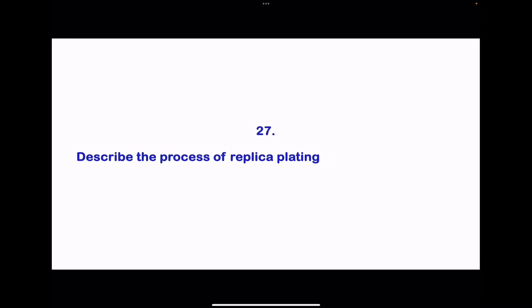Question 27. Describe the process of replica plating. In replica plating, a sterile velvet cloth or filter paper is placed onto a master plate to pick up some cells from each colony, then pressing it onto a secondary plate with selective media. After incubation, growth on the replica plate is compared to that on the master plate to identify colonies with specific traits, such as antibiotic resistance or metabolic capabilities. This method is essential for studying microbial genetics, identifying mutants and the examination of different environmental conditions on microbial growth.